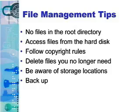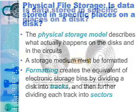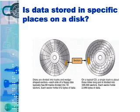The physical storage model describes what actually happens on disks and in the circuits. Before a computer can store a file on a disk, CD, or DVD, the storage media must be formatted. The formatting process creates the equivalent of electronic storage bins by dividing the disk into tracks and then further subdividing each track into sectors. Tracks and sectors are numbered to provide addresses for each storage bin. The numbering scheme depends on the storage device and the operating system.